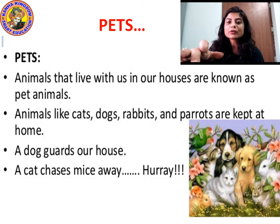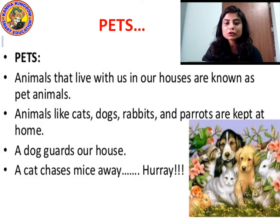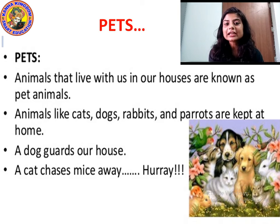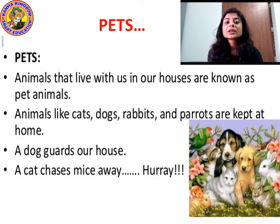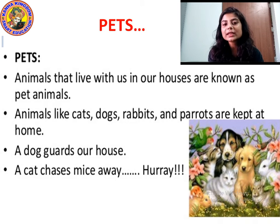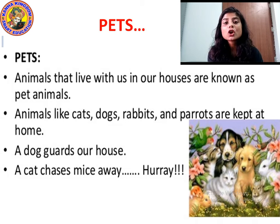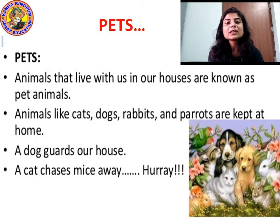What did we study today? We studied about the different animals that we domesticate. There are different kinds of animals — animals that live in jungles and animals that live with us. Wild animals like tiger, lion, elephant, monkey, and bear live in jungles. Domestic animals live in farms: cow, buffalo, goats, sheep, and horses. Pet animals that live with us in our home are dog, cat, rabbit, and parrot.